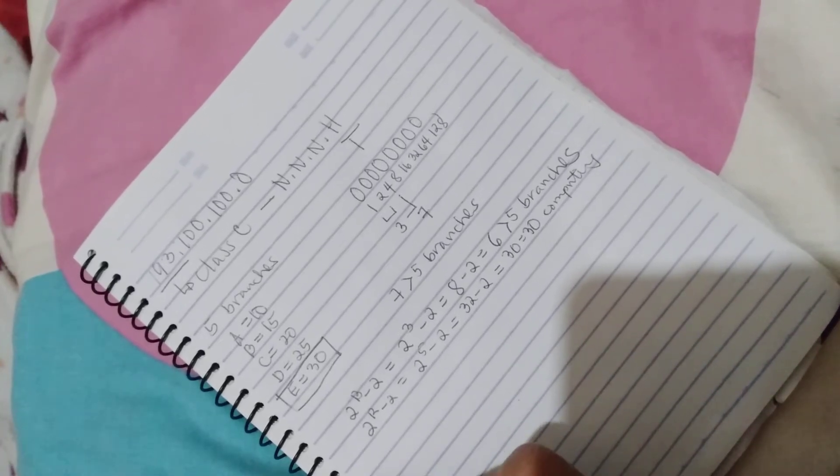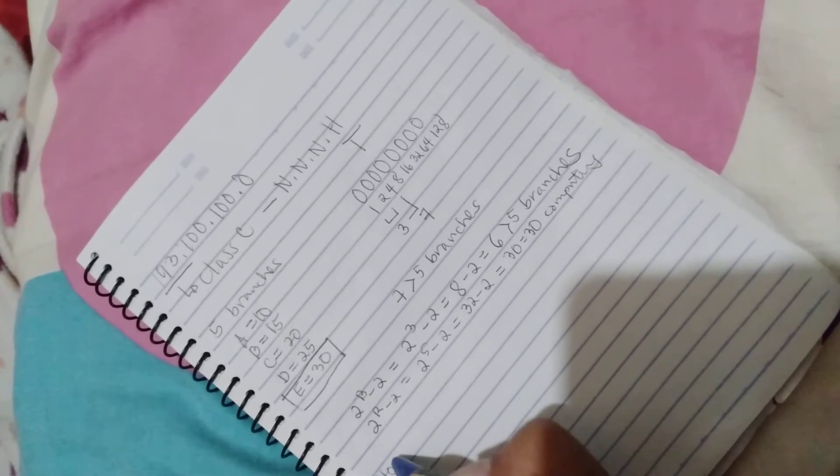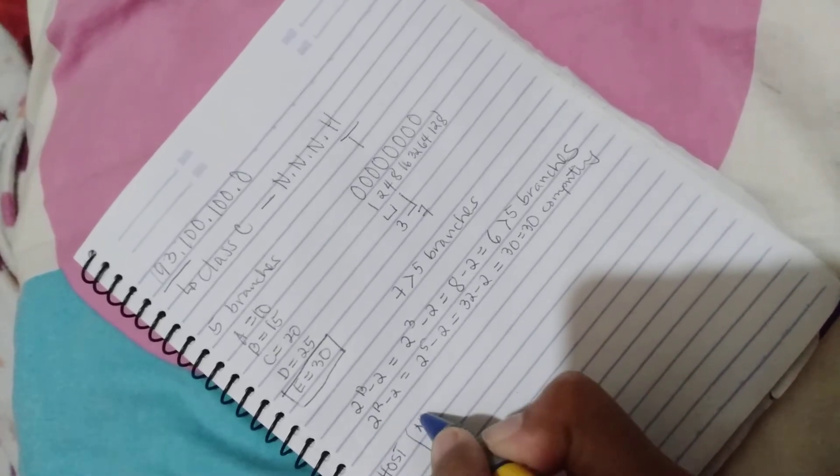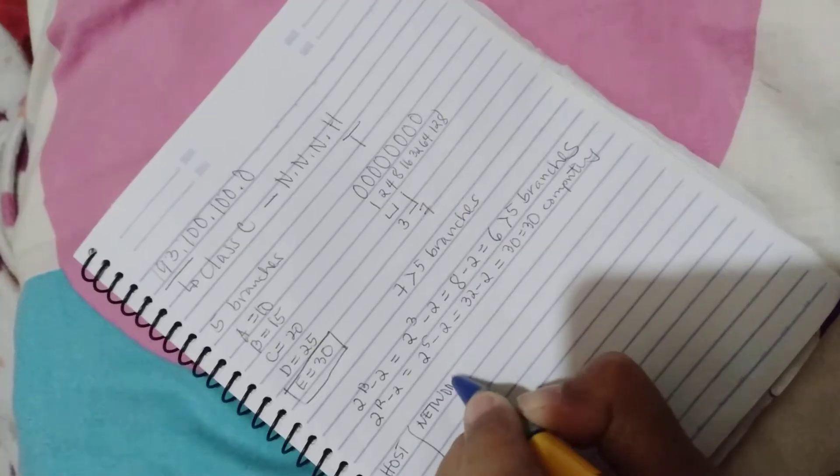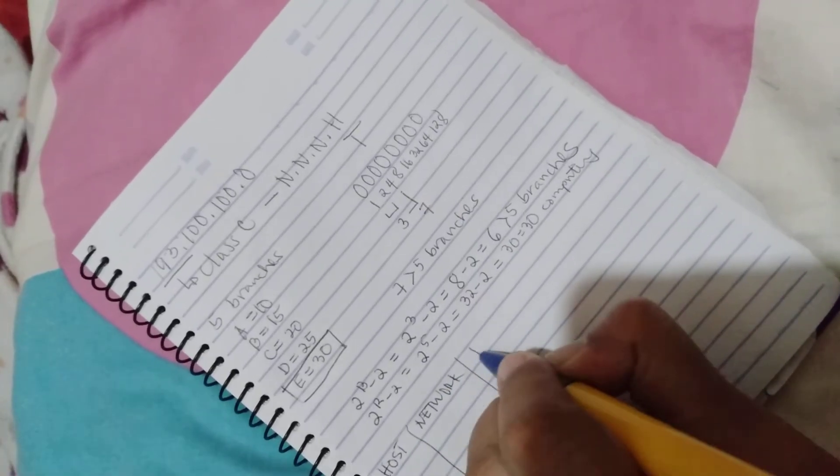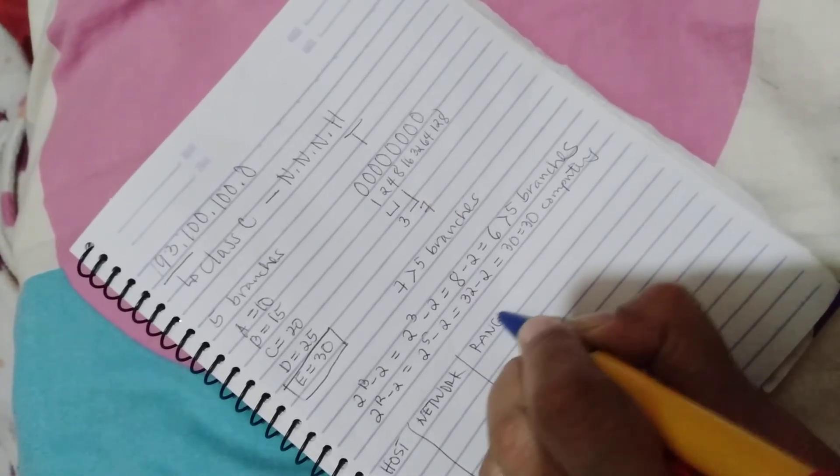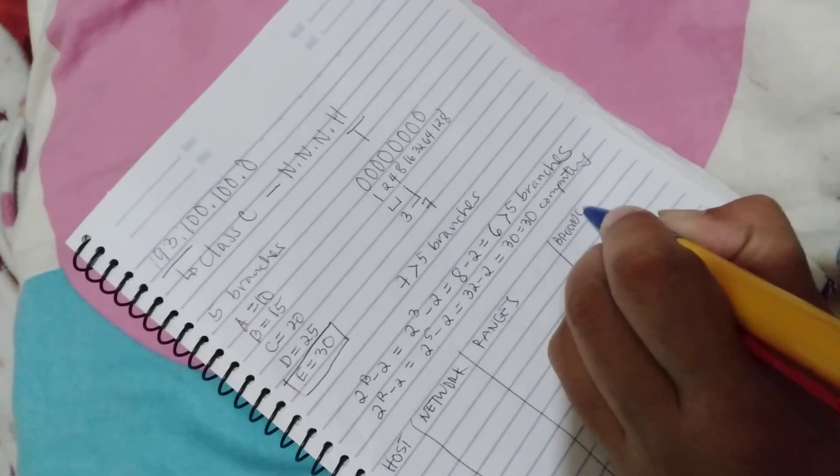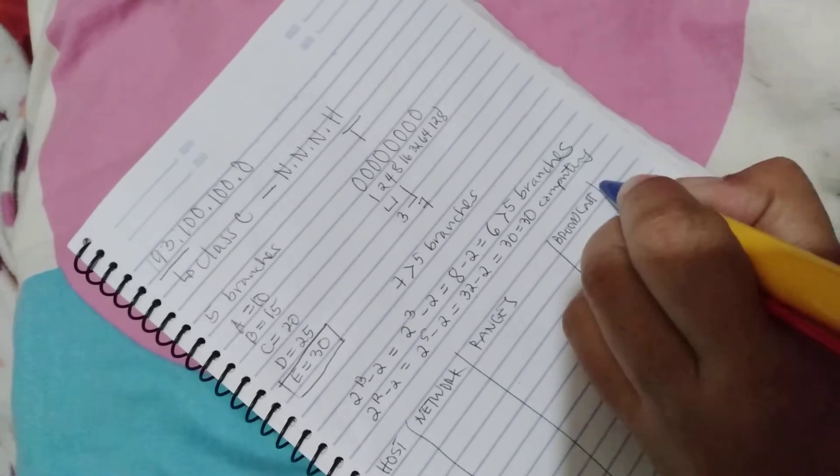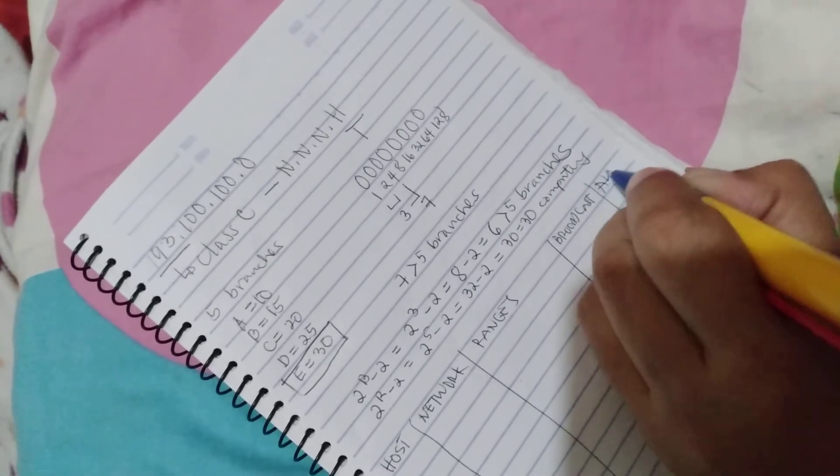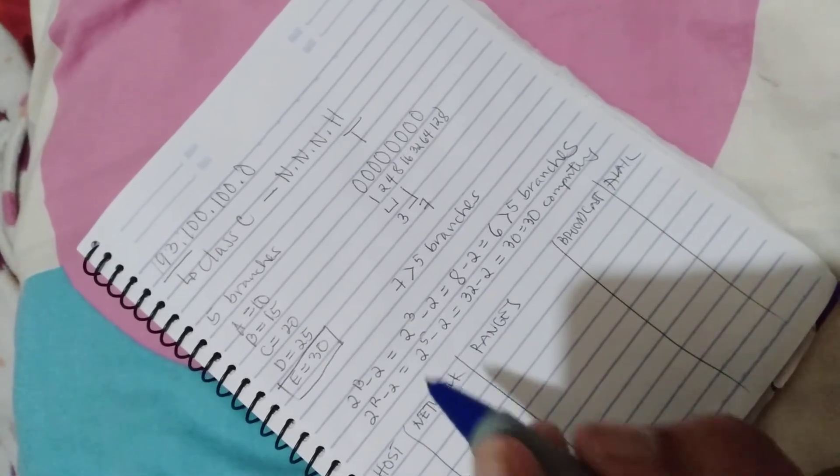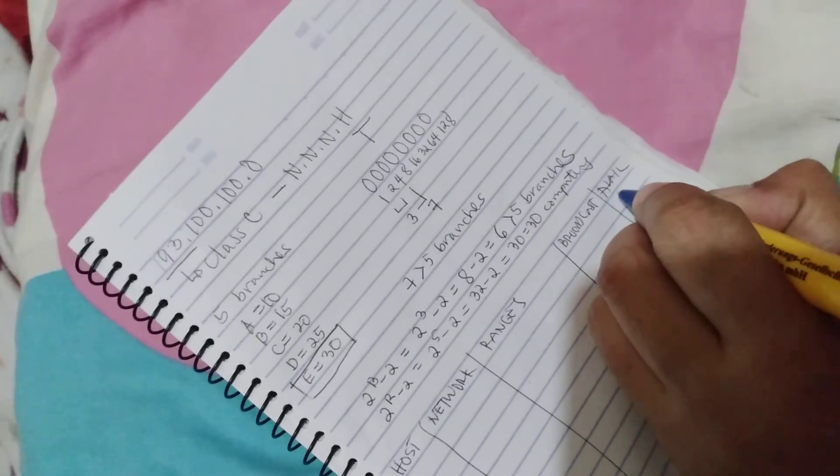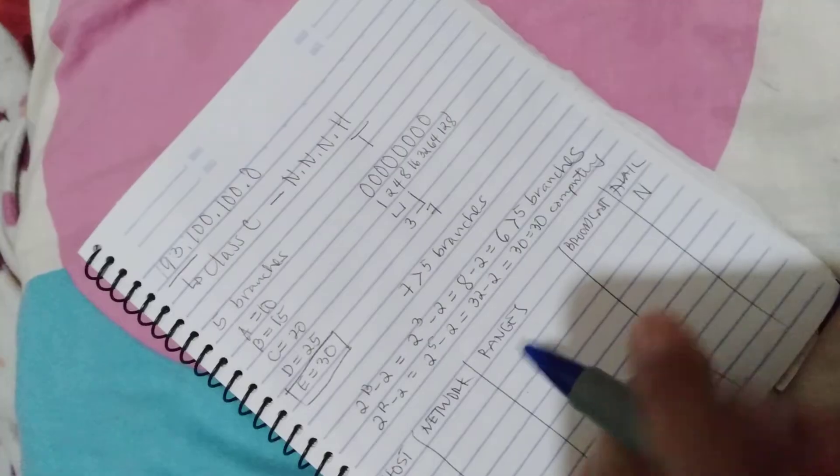After that, you will create a table for IP assignment. We have host, network, ranges of IP addresses, broadcast, and availability. The rules: first and last row is not available for distribution.